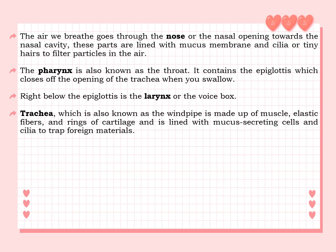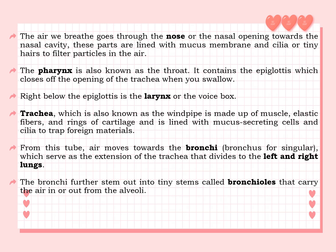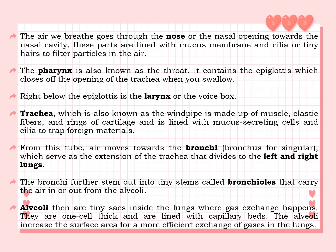The trachea, also known as the windpipe, is made up of muscle, elastic fibers, and rings of cartilage, and is lined with mucous-secreting cells and cilia to trap foreign materials. From this tube, air moves towards the bronchi (bronchus, singular), which serve as the extension of the trachea that divides into the left and right lungs. The bronchi further branch out into tiny stems called bronchioles that carry air in or out from the alveoli. The alveoli are tiny sacs inside the lungs where gas exchange happens; they are one cell thick and lined with capillary beds. The alveoli increase the surface area for a more efficient exchange of gases in the lungs.